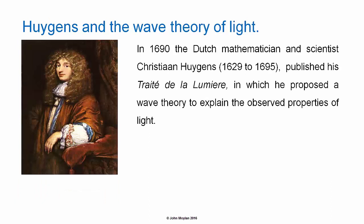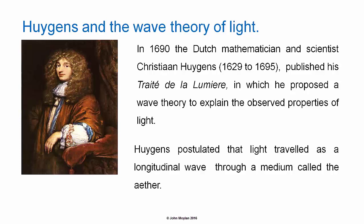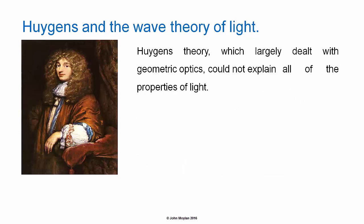In 1690 the Dutch scientist and mathematician Christian Huygens published his Tres de la Lumiere, in which he proposed a wave theory to explain the observed properties of light. Huygens postulated that light travelled as longitudinal waves through a medium called the ether. Huygens theory, which largely dealt with geometric optics, could not explain all of the properties of light.